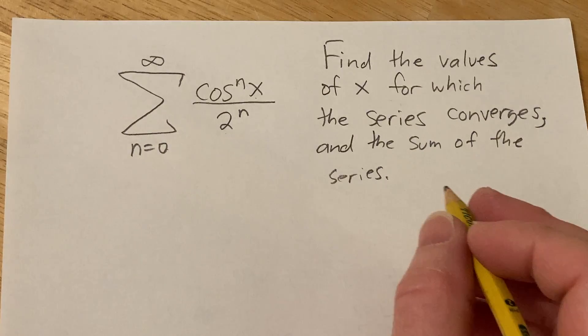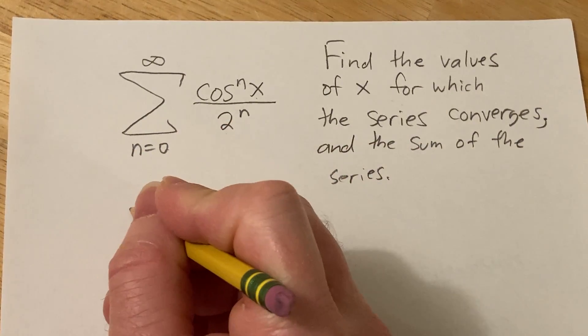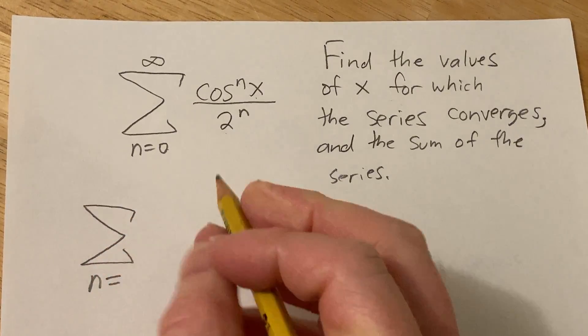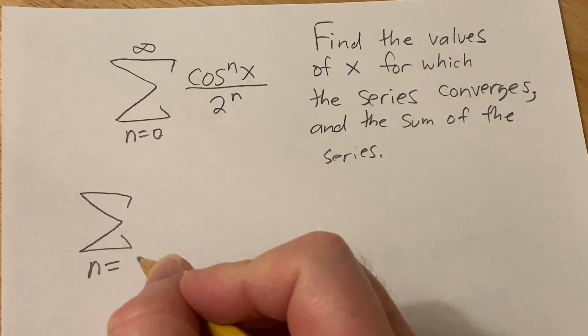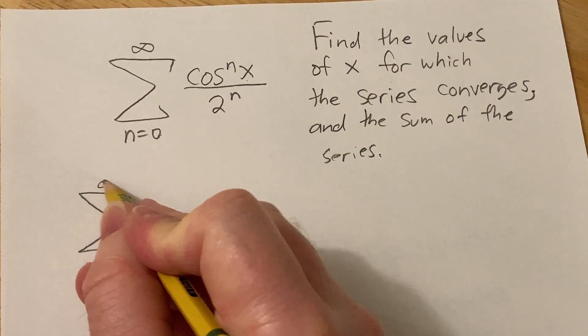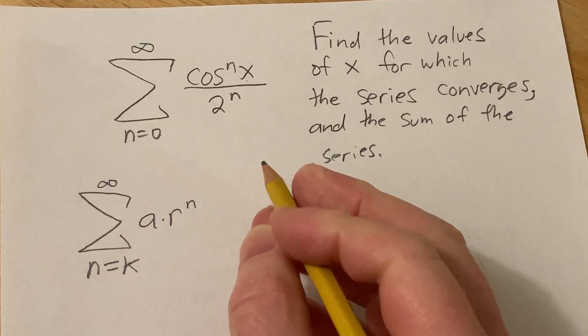So we're going to be using a geometric series, so let me just explain what that is. So if you have a series that looks like this, where n starts at... Now I can put any number here, so I'm going to be bold, I'm going to put a k. And say you have a series like this, a times r to the n where a is a constant.